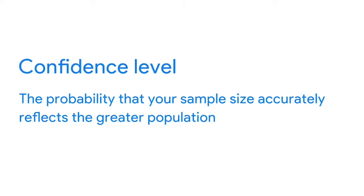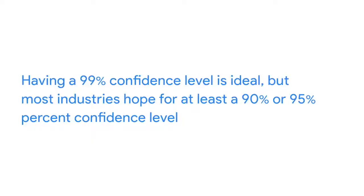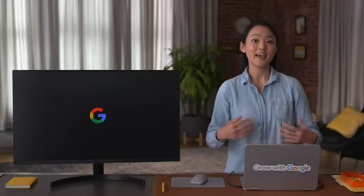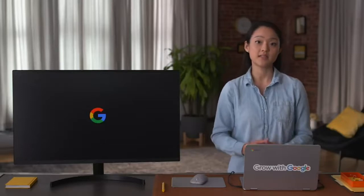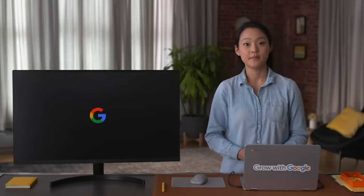The confidence level is the probability that your sample accurately reflects the greater population. Having a 99% confidence level is ideal, but most industries hope for at least a 90 or 95% confidence level. Industries like pharmaceuticals usually want a confidence level that's as high as possible when using a sample size, because they're testing medicines and need to be sure they work and are safe for everyone. For other studies, organizations might just need to know the test results have them heading in the right direction — for example, if a paint company is testing new colors, a lower confidence level is okay.